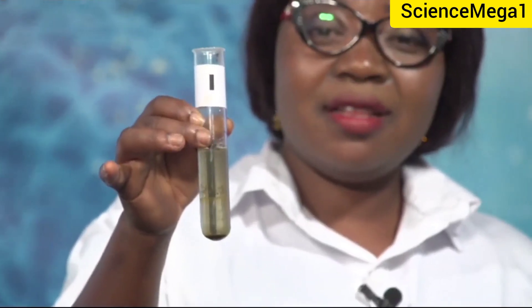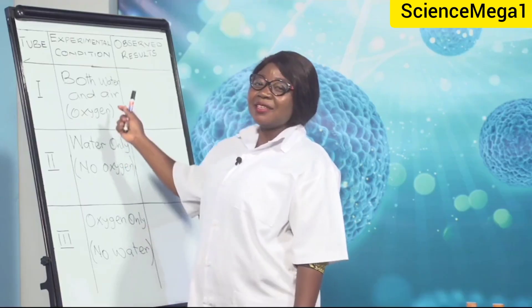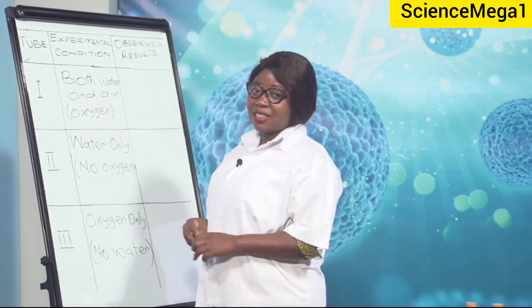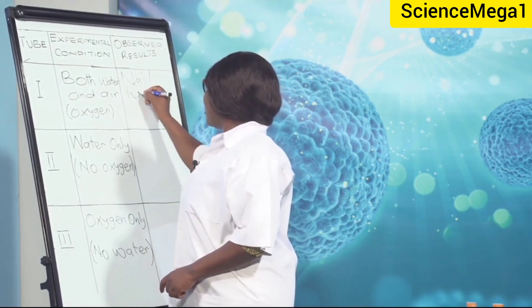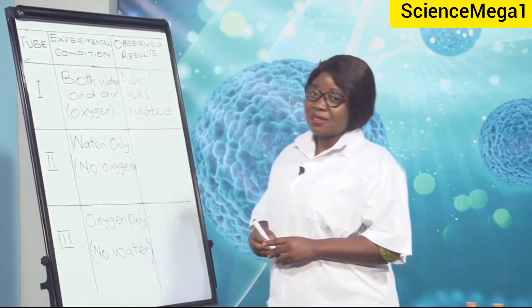Welcome back to the lab. Let's observe the outcome of the investigation and complete the table. The nail in test tube one has rusted — you can see the reddish-brown stain on the nail. The nail in test tube one was subjected to both water and air or oxygen, and therefore it has rusted.